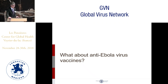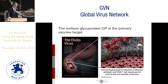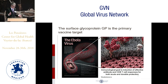Regarding anti-Ebola virus vaccines, there were feverish attempts to produce both vaccines and drugs. In principle, it is not very complicated to establish an anti-Ebola virus vaccine, because you only need to target the one surface glycoprotein. As soon as you induce an effective antibody and T-cell response in the vaccine, you can really protect people.